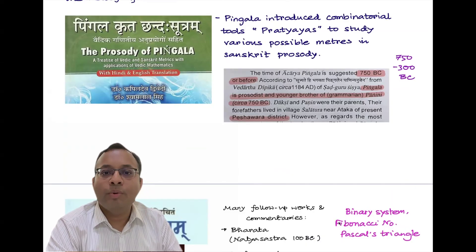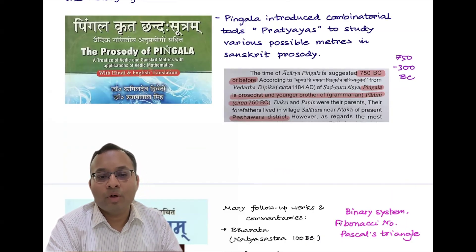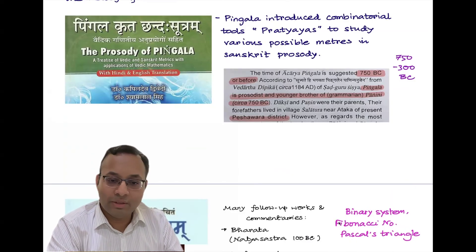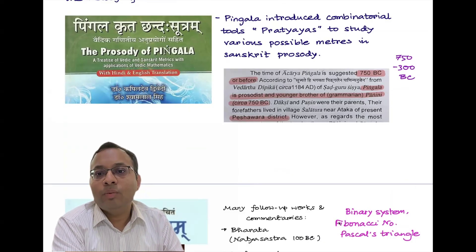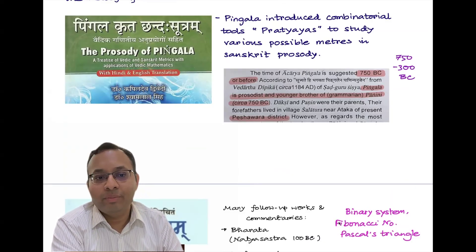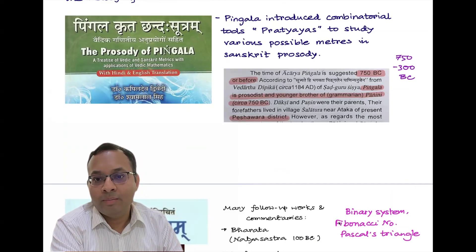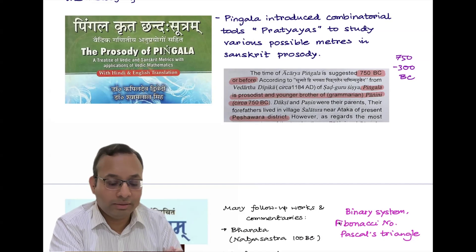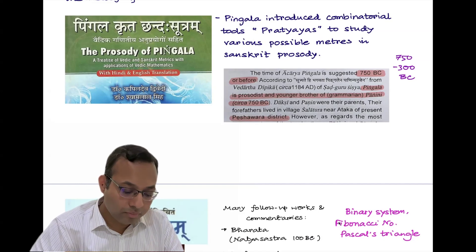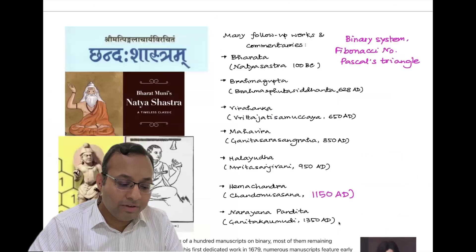Pingala introduced combinatorial tools called Pratyayas to study various possible meters in Sanskrit Prosody. According to Kapil Devdivedi and Shamlal Singh, Pingala probably lived around 750 BC or before. He was probably the younger brother of grammarian Panini, and was probably in the Gandhara region of North India. Pingala gave the Chanda Sutra — it's a sutra thread, very condensed.